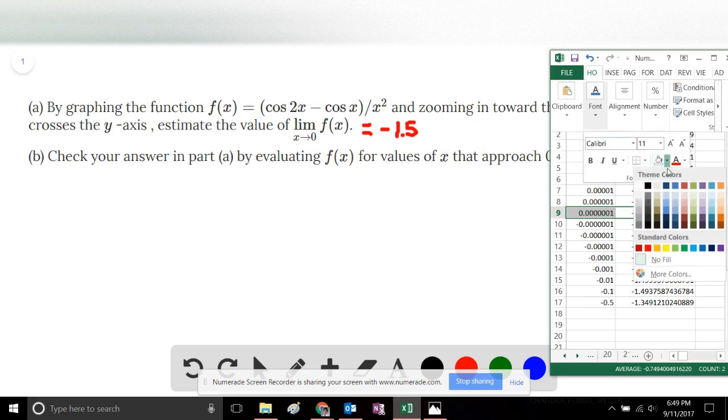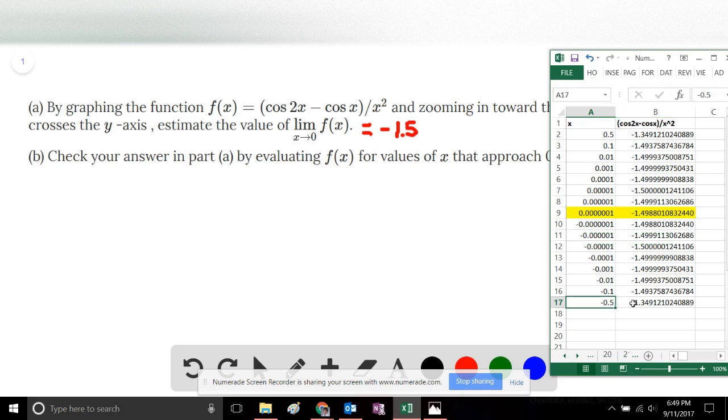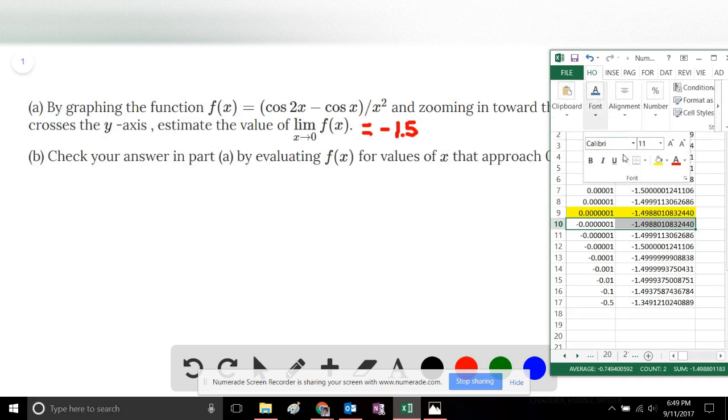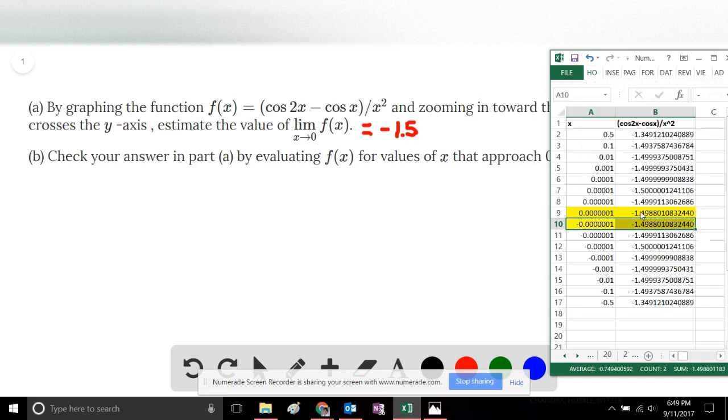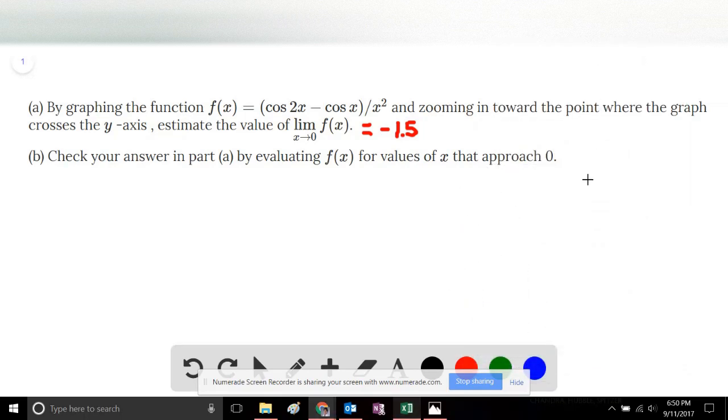Similarly, from the left, values that are negative and close to 0, we see the calculations getting closer to about negative 1.5, until we reach this point, at which we can say definitively that our limit as x approaches 0 for this function is negative 1.5. And we have confirmed part A.